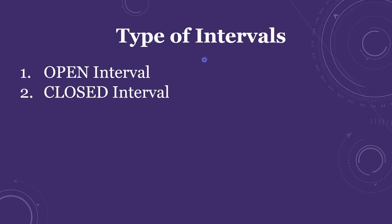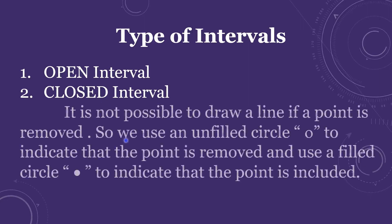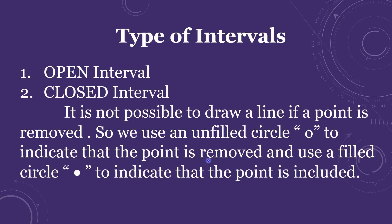When representing an interval on the number line, for an open interval we should not include that endpoint, so we use an empty circle to indicate the point is removed. For a closed interval, we use a filled circle to indicate the point is included. A line is a collection of points, so we use an unfilled circle like O to show a point is removed, and a filled circle to show it is included.